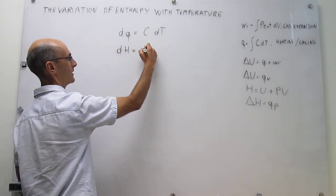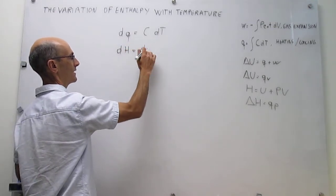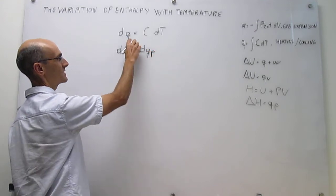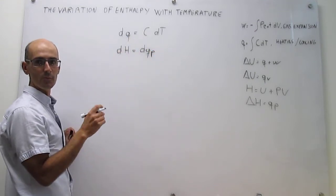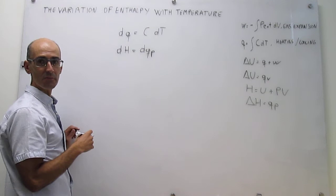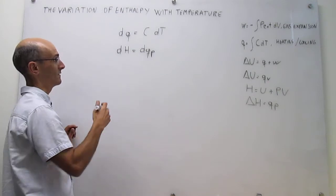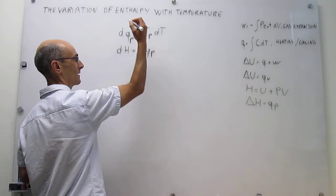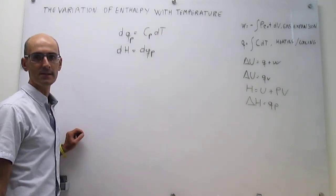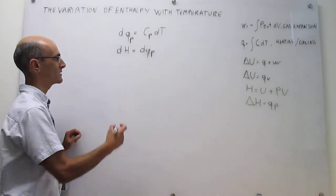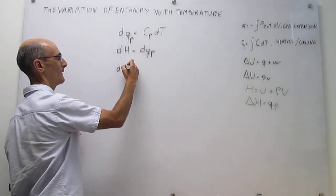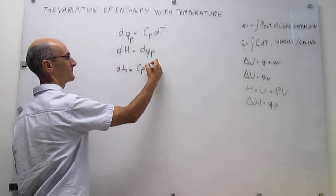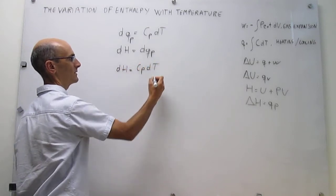We simply have to modify this expression to make it be at constant pressure. At constant pressure, it just happens that the heat capacity is the heat capacity at constant pressure. So that is going to give us how the enthalpy changes with temperature. This is how enthalpy depends on temperature.